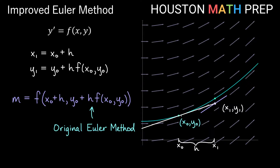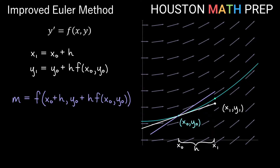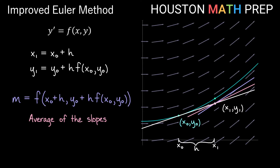If we take the slope on the right side and put it through our original point, it may not be any better of an approximation than the tangent slope — it gives an approximation with error on the opposite side of the correct y value. If we only use the slope of the slope field through x1, y1, that may not be any better than the original Euler's method. What we can do is think about something in the middle of those two slopes — that's going to give a better approximation, taking into account the slope on the left side and the slope on the right side of the interval. The way improved Euler's method works is it takes the average of those two slopes.